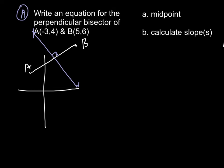So to find our midpoint, we're going to use our midpoint formula. So M equals x₁ plus x₂ over 2, and y₁ plus y₂ over 2.